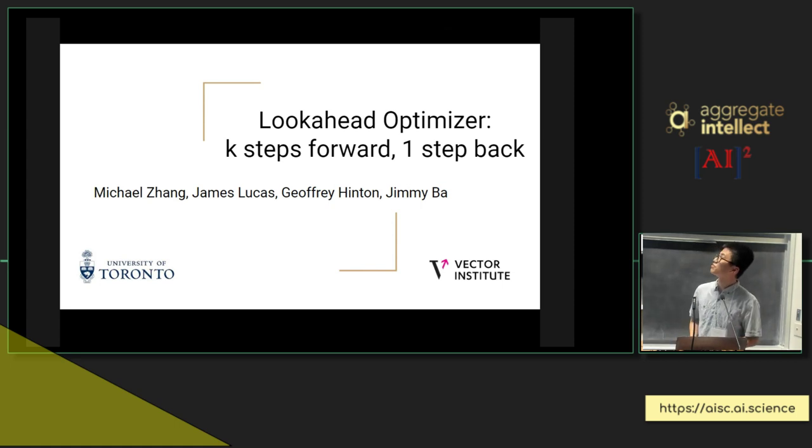A lot of work on optimization has been on adapting momentum or changing how fast you train on different directions. But another perspective you can take is on averaging the weights you accumulate throughout training. This has actually been studied from the perspective of convex optimization back in 1992 by Polyak, and Ruppert had some work in 1988 as well. Essentially what the work from before showed is that if you take the arithmetic average of your weights, you get faster convergence in convex optimization.